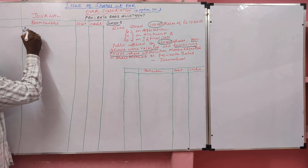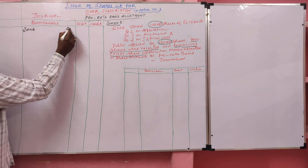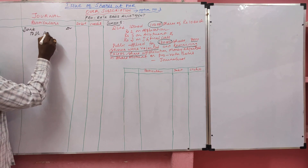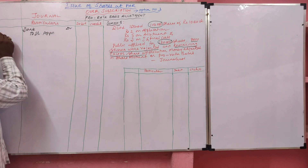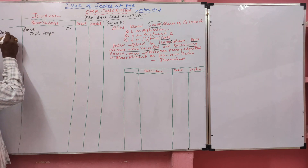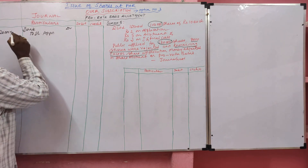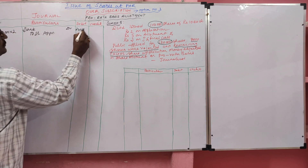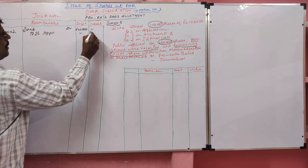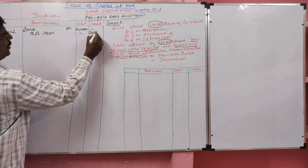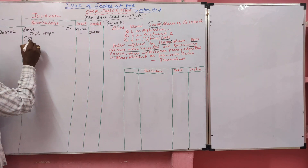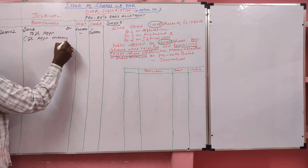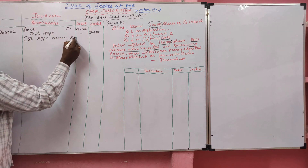As usual, we start with share application. Bank Account Dr to Share Application. We received applications for 1,20,000 shares × Rs. 2 = Rs. 2,40,000. Narration: Share application money received.